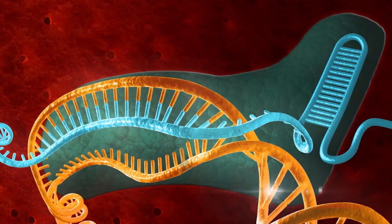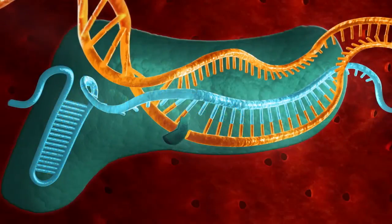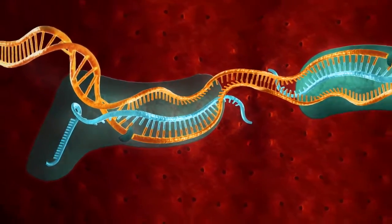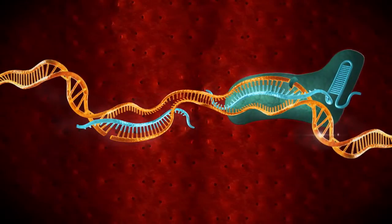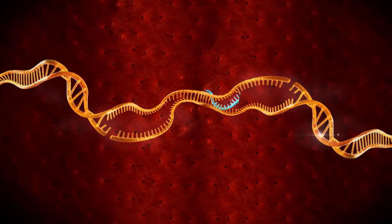While bacterial Cas9 is capable of introducing double-strand breaks, a modified version introduces only single-strand nicks to the DNA, which can be exploited to reduce the off-target cutting sometimes seen using the wild-type Cas9. By using the nickase form of Cas9 with two guide RNAs targeting opposite strands of the target DNA, a double-strand break is achieved with reduced off-target activity.